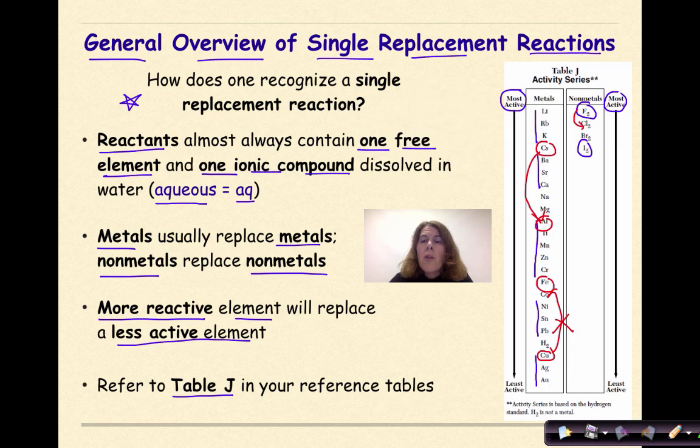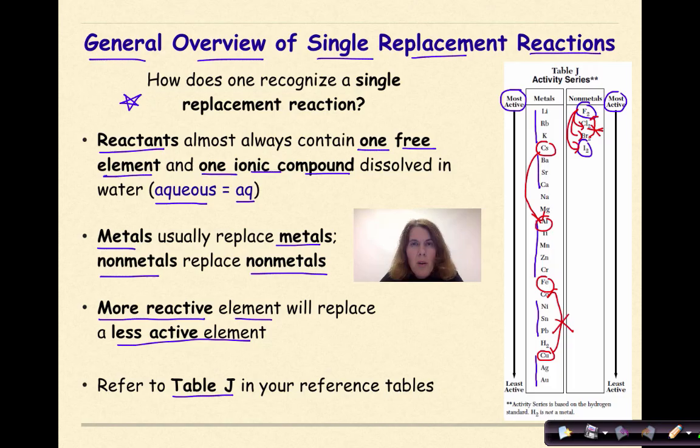Same thing goes with your nonmetals. Fluorine can replace chlorine, or it can replace bromine, or it can replace iodine in a single replacement reaction, but bromine cannot replace fluorine. So you can only go from the top of the table to the bottom of the table in terms of an effective single replacement reaction occurring.